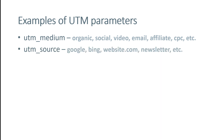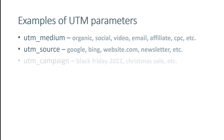UTM source is a bit more specific — it might be Google, Bing, the URL of a website, or just the word 'newsletter'. If you combine medium and source, you can see that people are coming from Google organic search or Google paid advertising (CPC). You might also want to add the campaign name — something like 'Black Friday 2022' or 'Christmas Sale'. The more UTM parameters you add, the more granular your analysis can be.